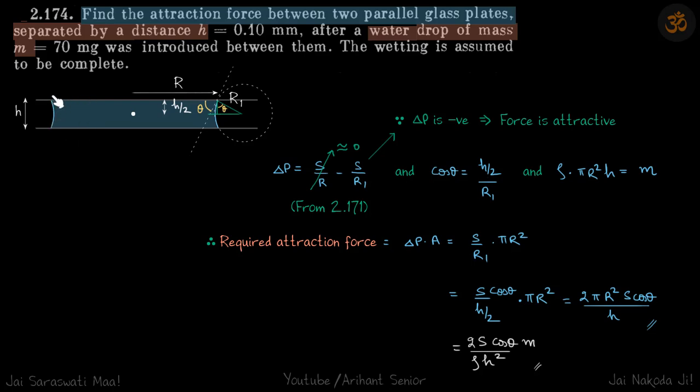In case of mercury, when the meniscus was the other way around, bulging out like a tablet, inside pressure was more than outside pressure, so that excess pressure was pushing the plates. Here, because of the meniscus, the plates will be attracted to each other.